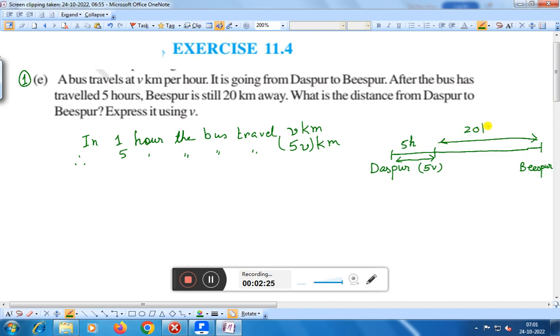Therefore, from this figure we can say that the total distance will be 20 plus 5V kilometers. What is the total distance from Daspur to Bispur?